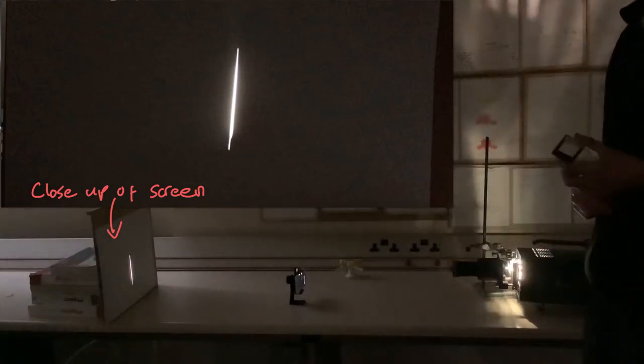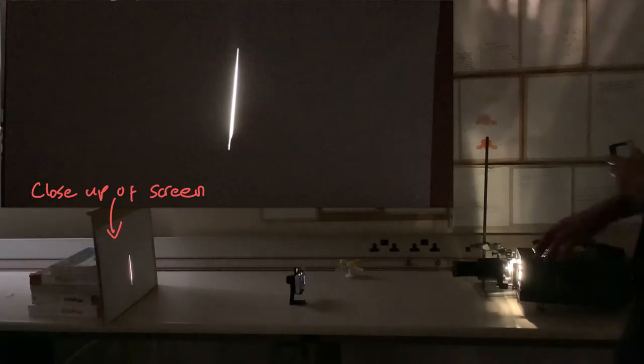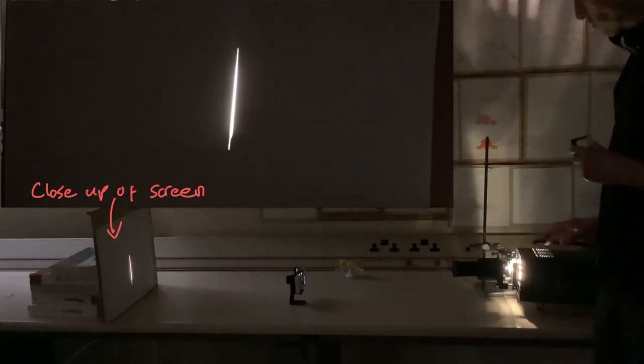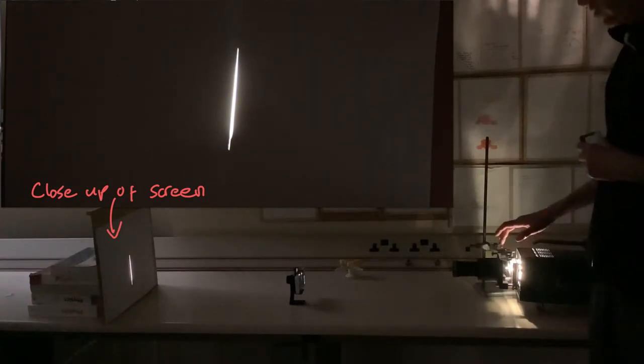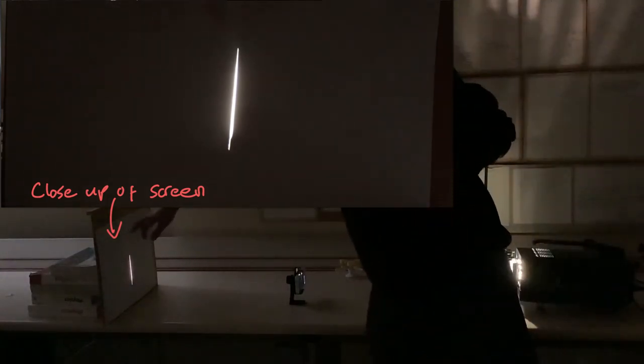In this video we're going to look at the effect of a diffraction grating with white light. So over on this side I've got a white lamp with a narrow single slit in front of it, and then I'm directing that onto the screen over here.